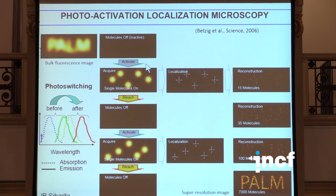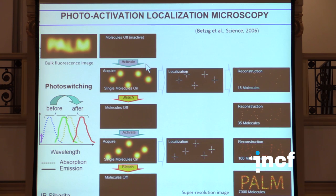And then you do that over and over again until you can actually reconstruct a super-resolved image that has gained more than an order of magnitude in terms of resolution. A variation of this method is called dynamic PALM, or single particle tracking PALM, where at the same time as you look at the localization of the molecules, you also look at their movement, so you get at the same time both the super-resolved image but also the dynamics of all the different molecules.